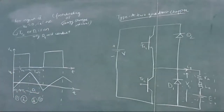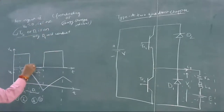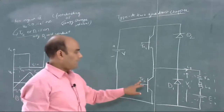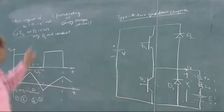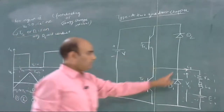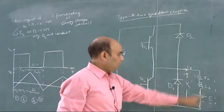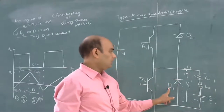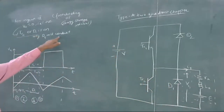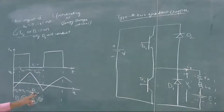In region 3, current Ia is positive and voltage VA is equal to 0. That means either TR2 or D1 is turned on. But since current is positive, the freewheel path is provided by D1, so only D1 starts conducting in region 3.